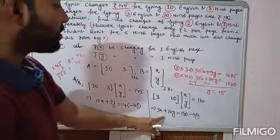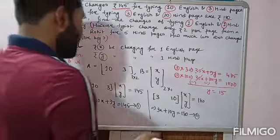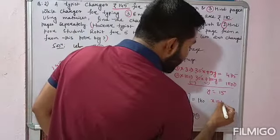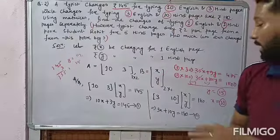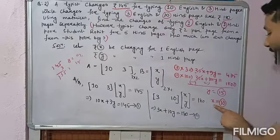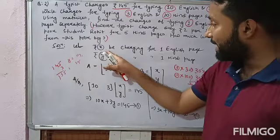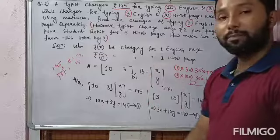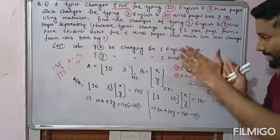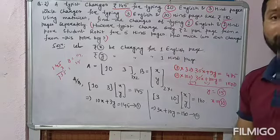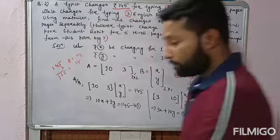Therefore, rupees 10 is the charge for one English page, and rupees 15 is the charge for one Hindi page. This is the solution to the first part. You can use elimination, cross multiplication, or substitution method to solve linear equations in two variables. The value of x and y may also be needed in the second part.